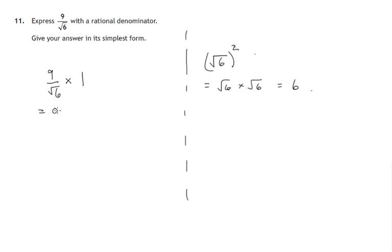So if we consider 9 over root 6 and multiply it by 1, but use 1 in the form of root 6 over root 6, then we'd be able to multiply the top value by root 6 and the bottom of the fraction by root 6.